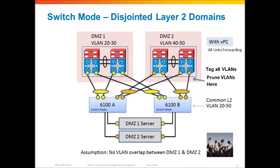One of the ways to attach UCS to separate upstream layer 2 domains with any version of UCS Manager is to convert the fabric interconnect to switch mode. In switch mode, the fabric interconnect acts and behaves like a normal layer 2 switch on all interfaces, performing MAC learning on all interfaces and using VLAN-based forwarding logic for the uplinks.